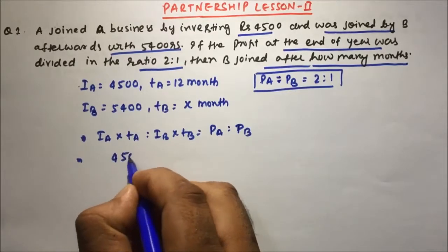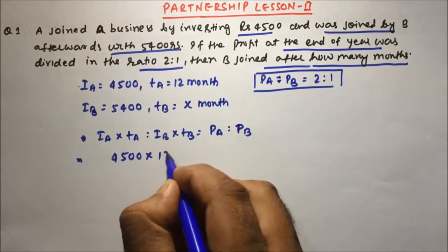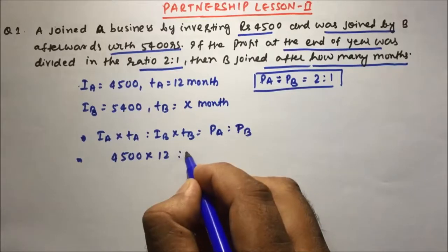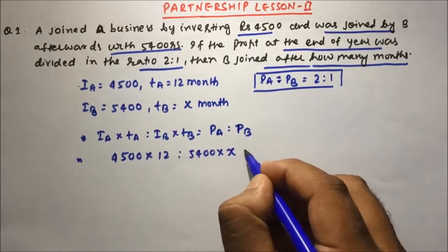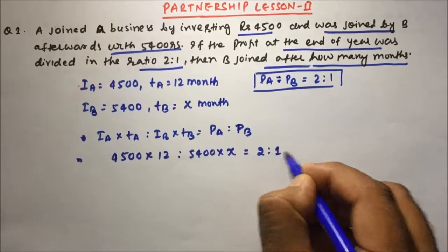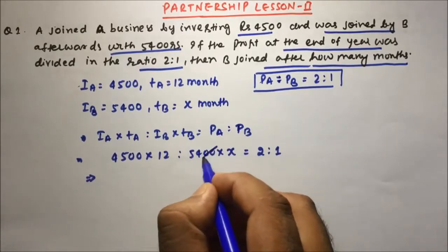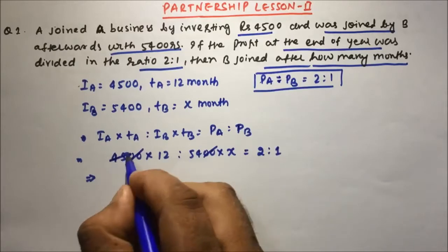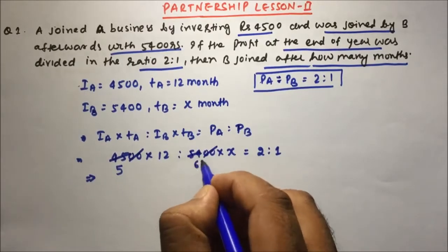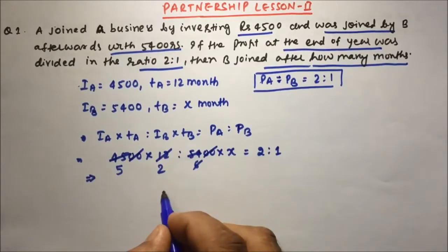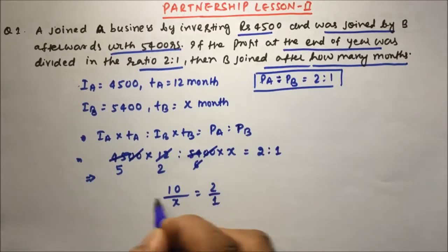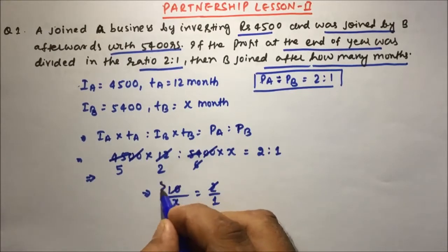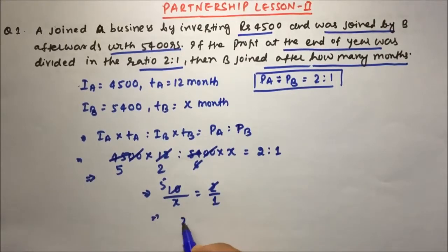Investment of A is 4500 for 12 months, and investment of B is 5400 for x months. The profit ratio is 2 is to 1. Simplifying: the zeros cancel, giving 45×12 divided by 54×x equals 2/1. Further simplification gives 10 divided by x equals 2, so x equals 5. That means B invested for 5 months.